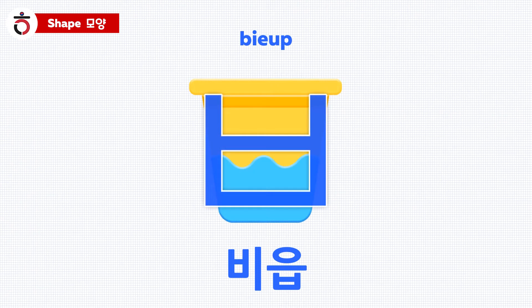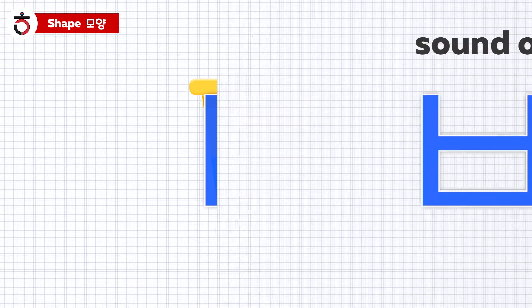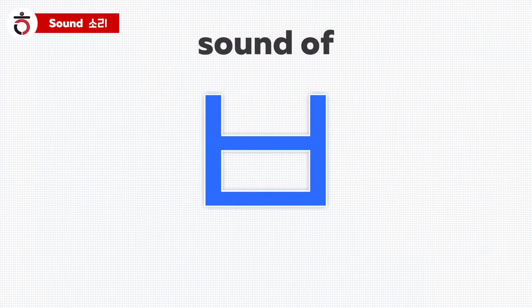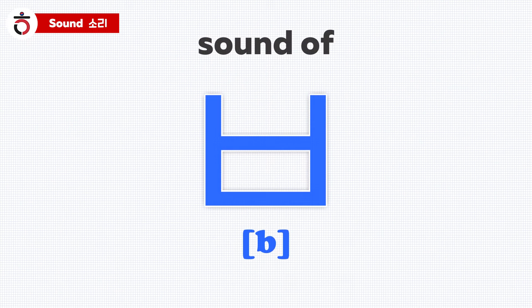Now let's move on to the sound of 비읍. 비읍 sounds like the 'b' sound in English.